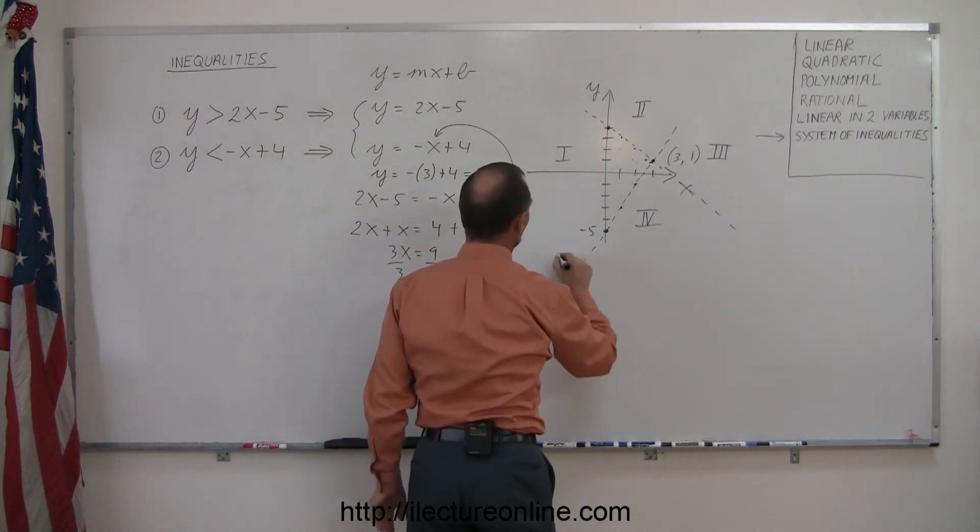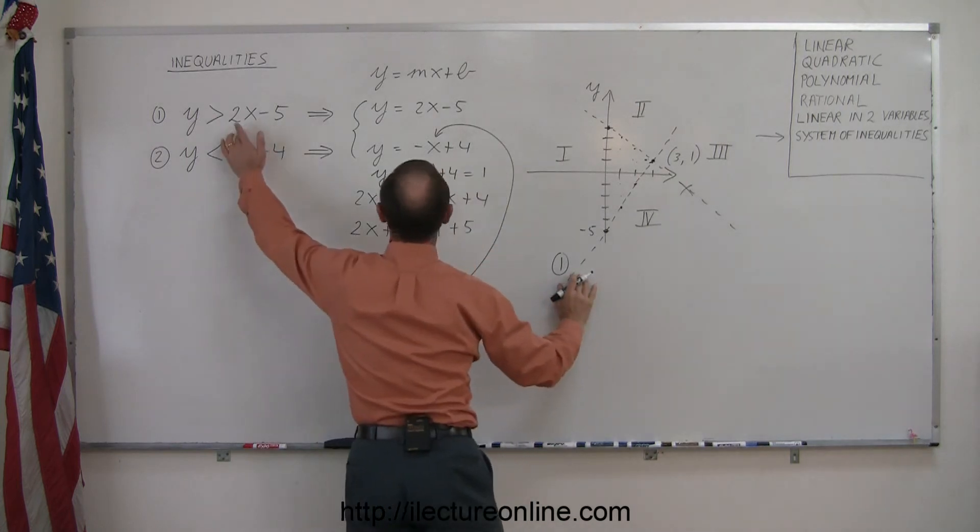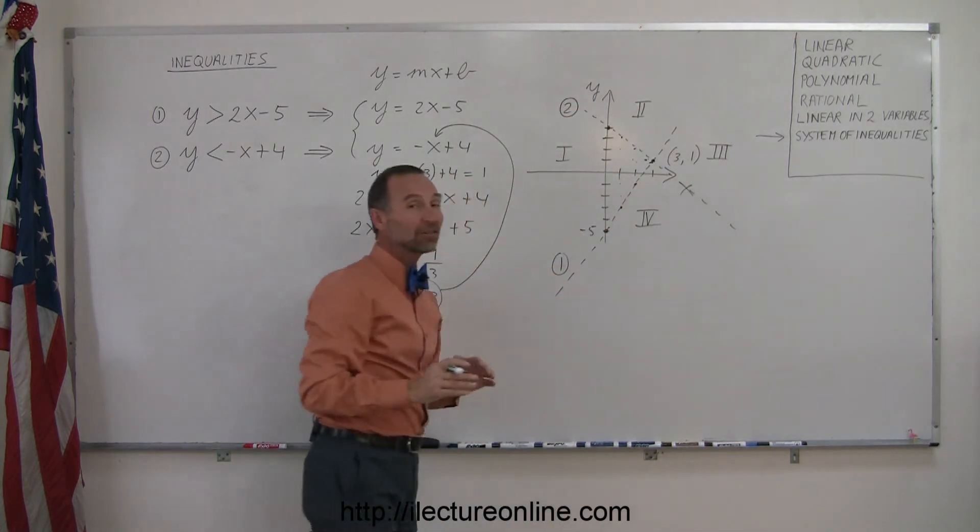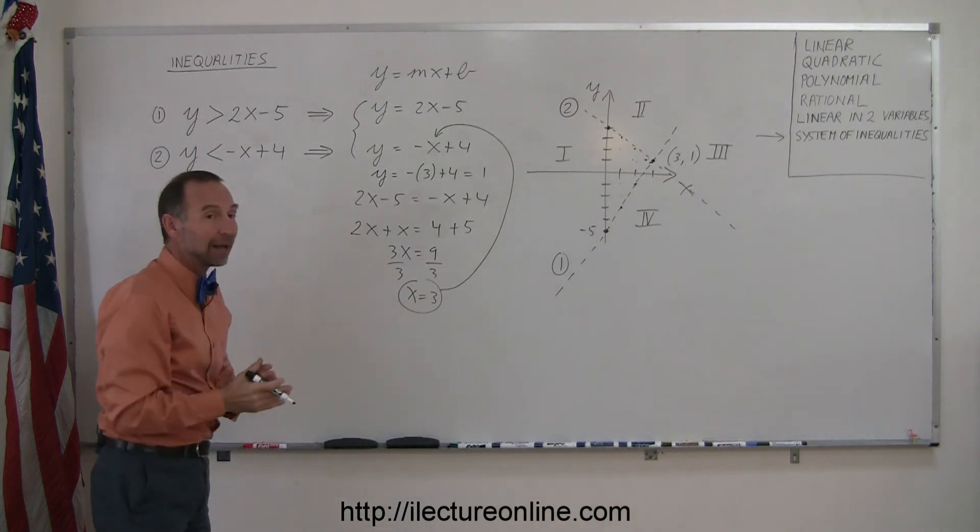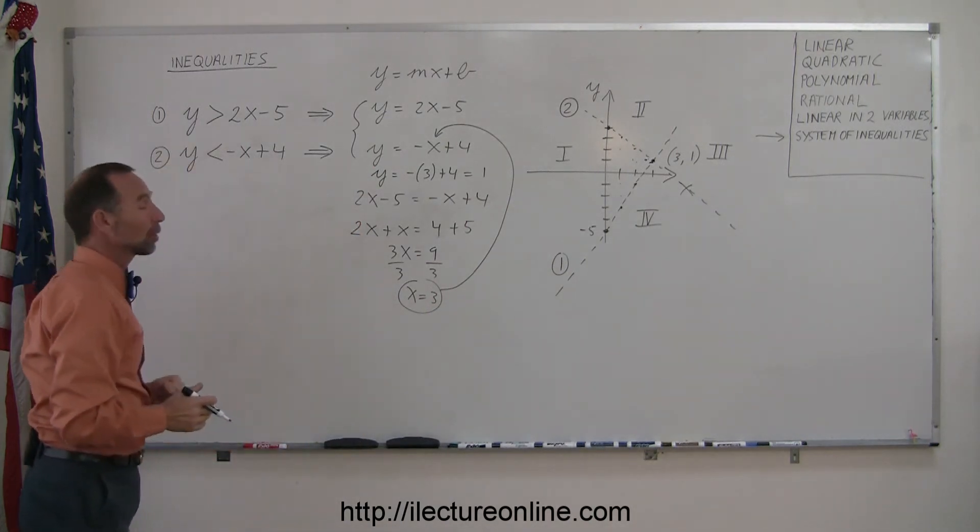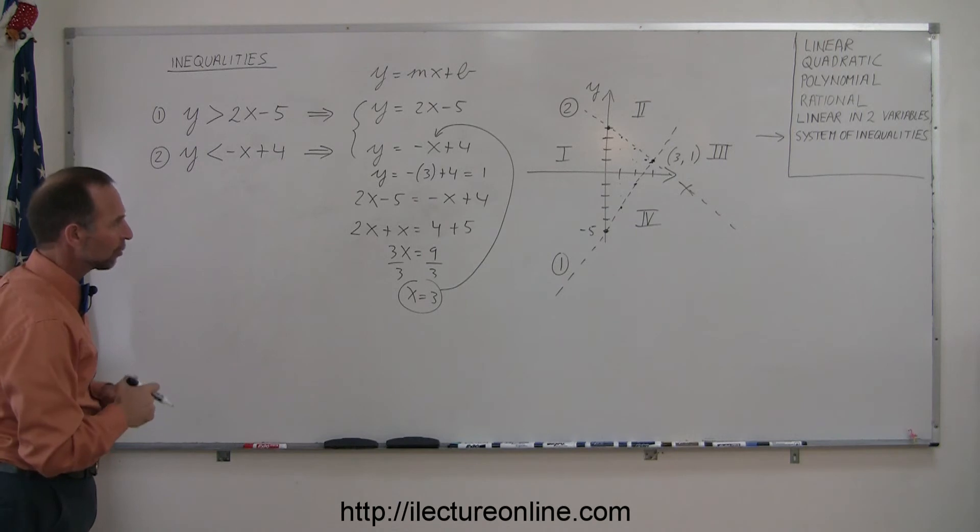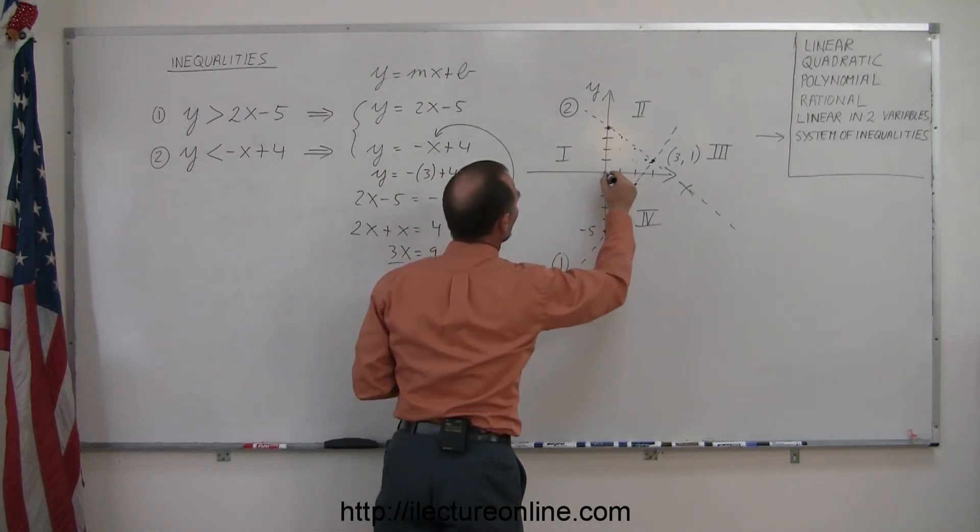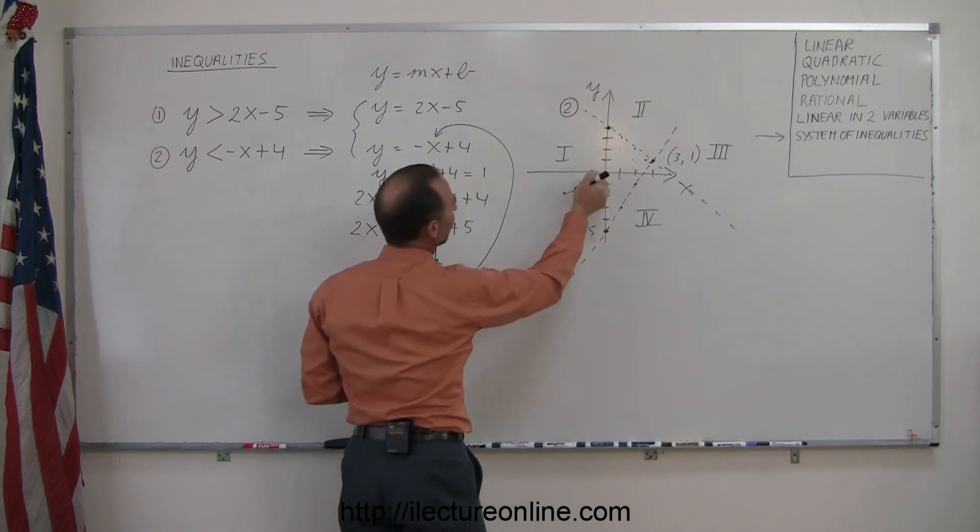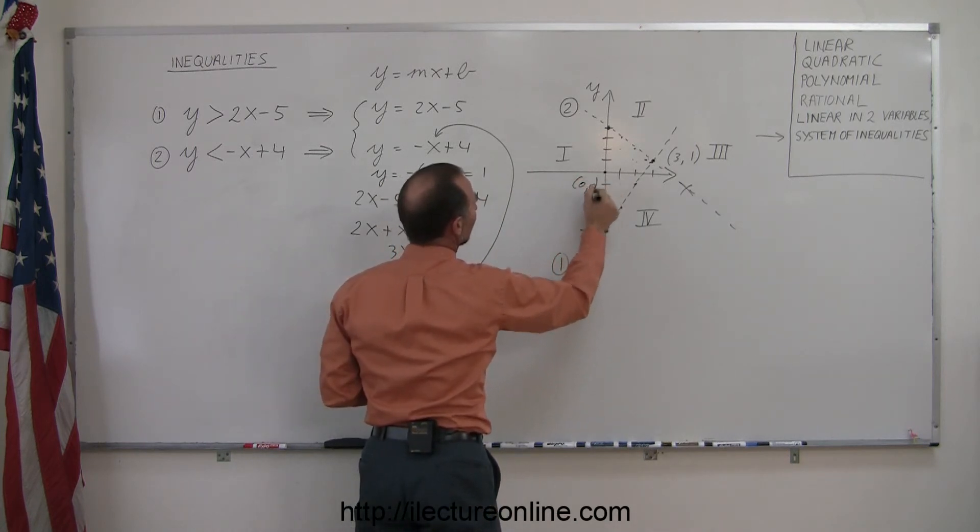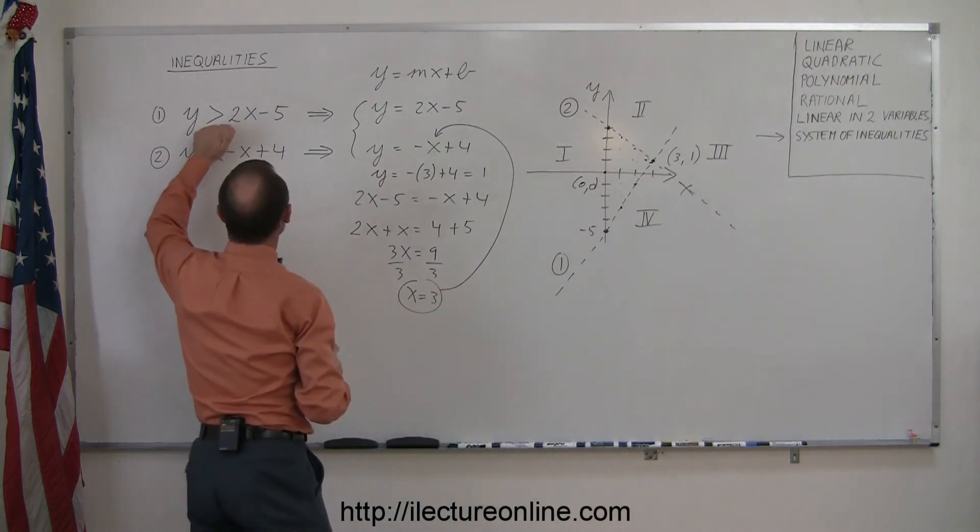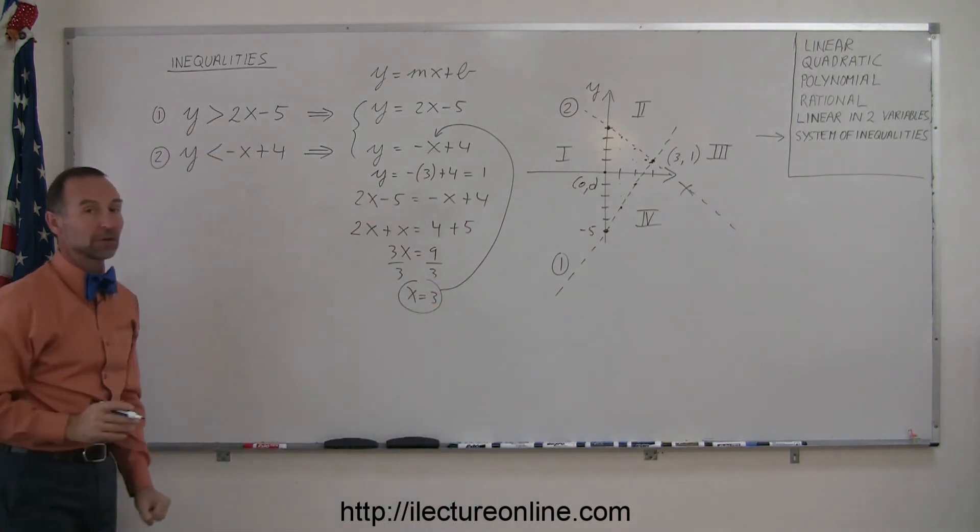This line here was associated with the first inequality, this line here was associated with the second inequality. And so in each case we're going to see which side of that line satisfies each of these inequalities. Starting with the first one, we're going to plug in a sample point. Okay, so 0, 0 is to the left of this line, which is the boundary of the solution set for this particular inequality.